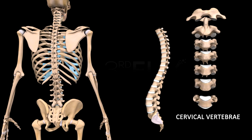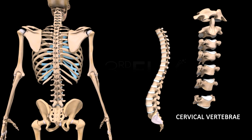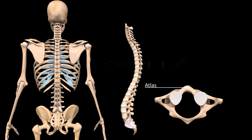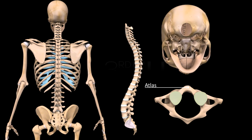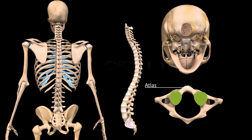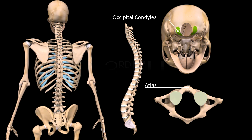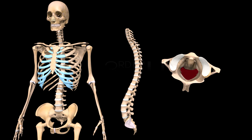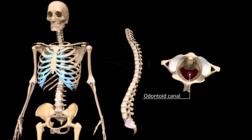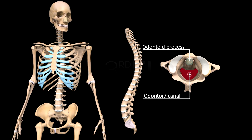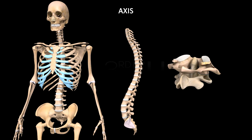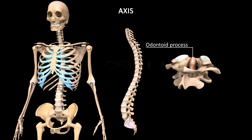Cervical vertebrae are the seven small-sized vertebrae of the neck region. The first cervical vertebra is the atlas, which is wing-like and lacks a centrum. It has two articular facets for articulation with the occipital condyles of the occipital bone of the skull for nodding movement of the head. It also has an odontoid canal for articulation with the odontoid process of the axis for sideways movement or rotation of the head. The second cervical vertebra is the axis, which has an odontoid process for articulation with the atlas.